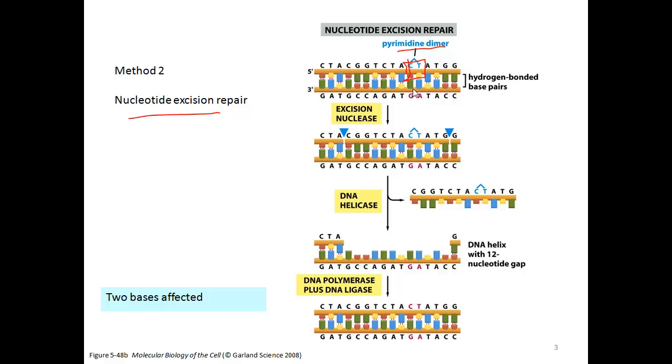Proteins constantly scan the genome. When they find this kind of error, they cleave the backbone at some distance from the lesion site, remove the entire piece of DNA using DNA helicase, and DNA polymerase fills in the template from 3 prime to 5 prime. Ligase seals the final nick. This is an efficient mechanism for repairing thymine dimers.